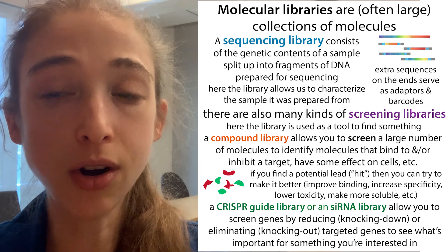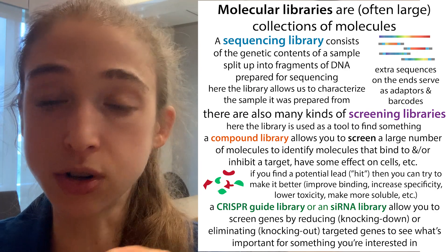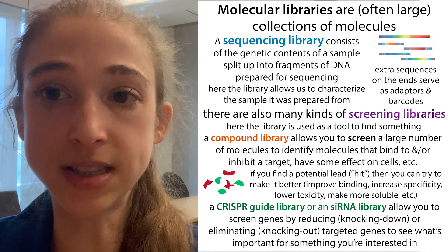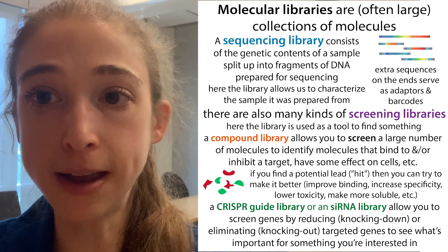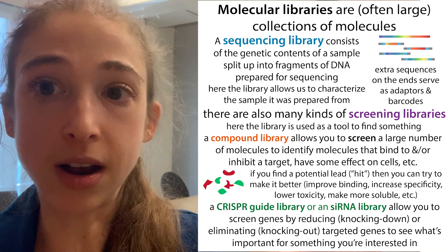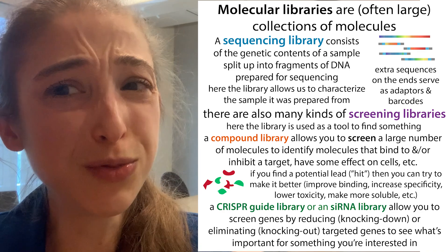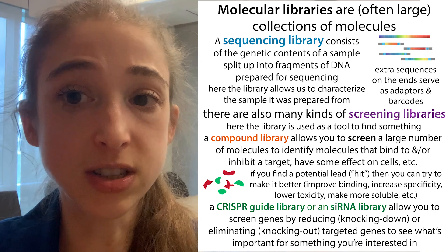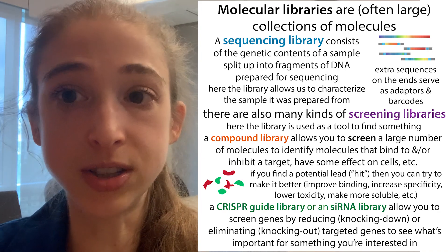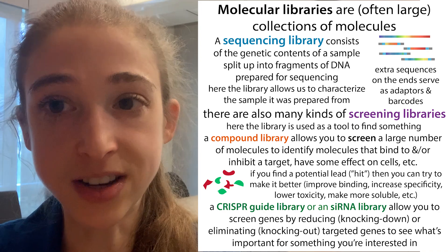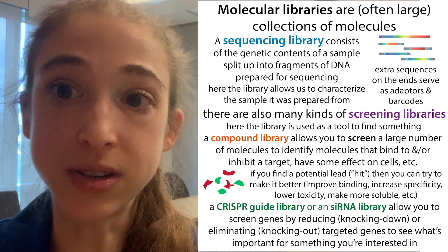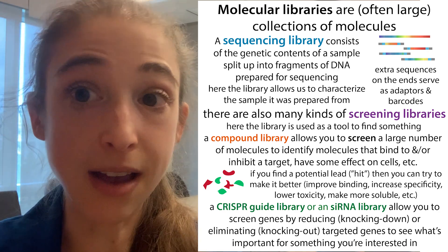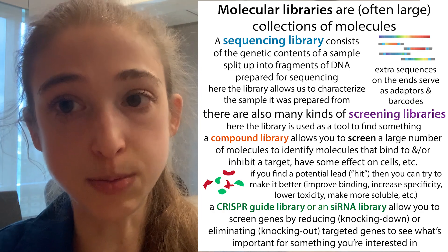There are all sorts of different experiments you can do based on these initial screens. These screens can be really targeted — maybe you know a certain pathway is involved and you want to target each gene known to be involved in that pathway — or sometimes they're more broad, where you want to knock out everything because you're really not sure what is actually involved. In any of these cases, you're typically using multiple guides and you want to validate after you find the initial hit, similarly to how you want to validate that a drug is actually having some effect after getting a hit from the initial experiment.